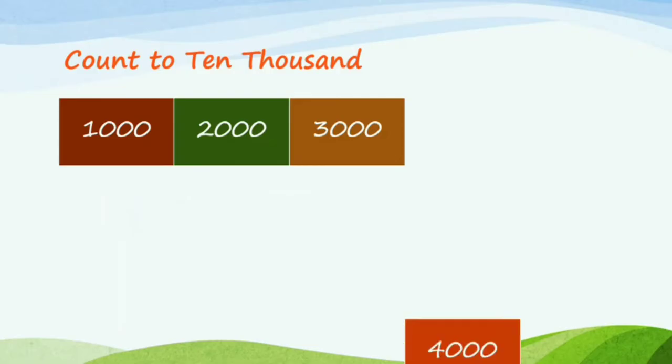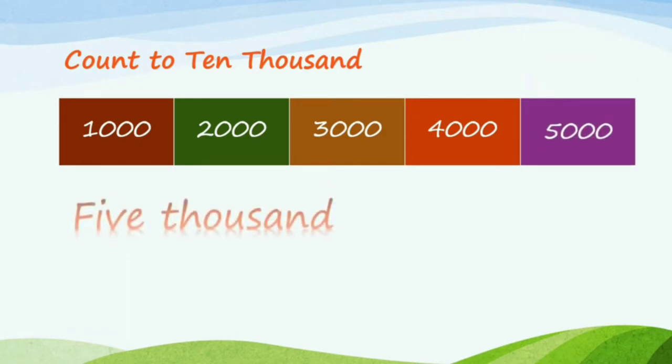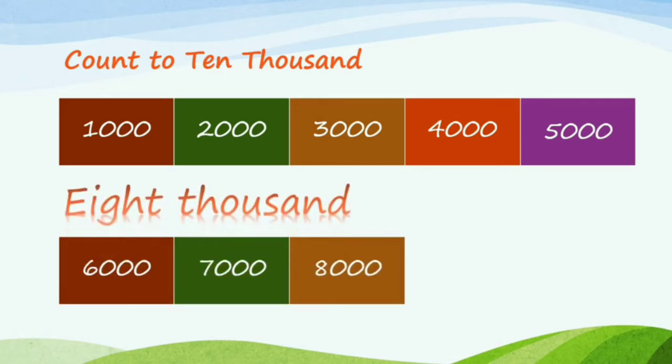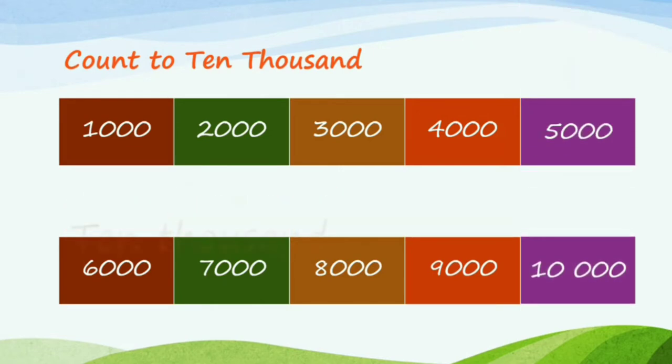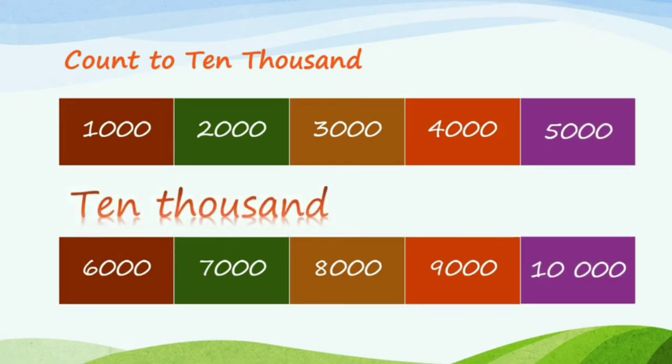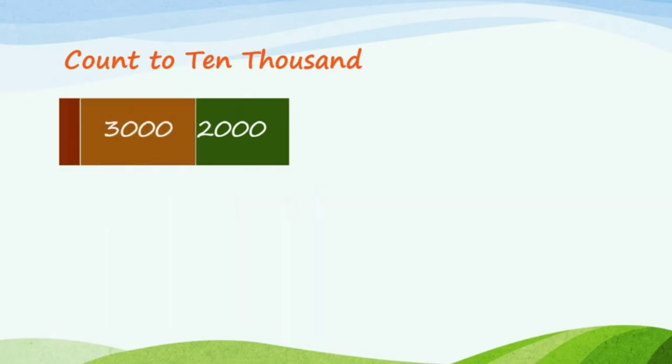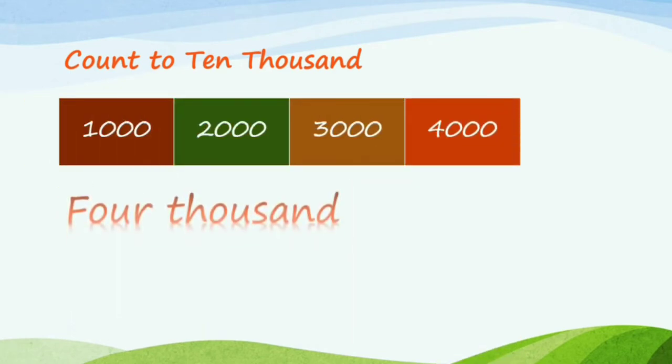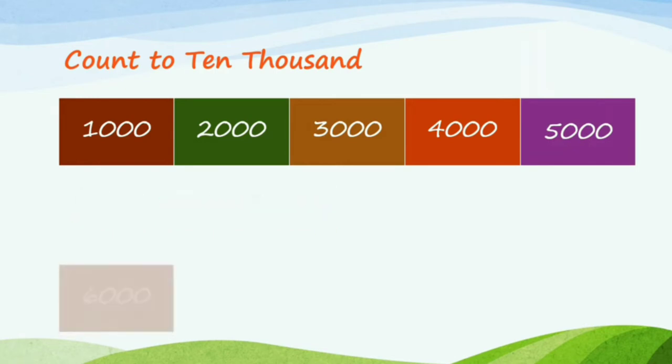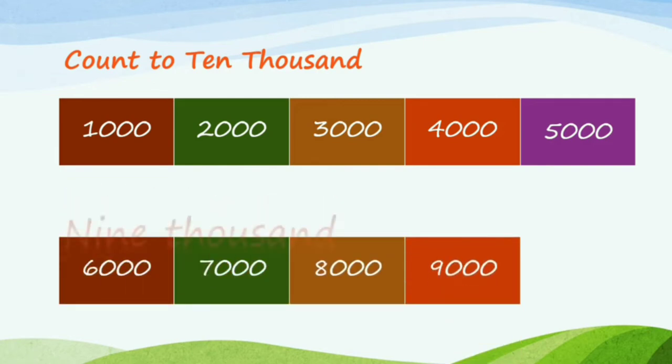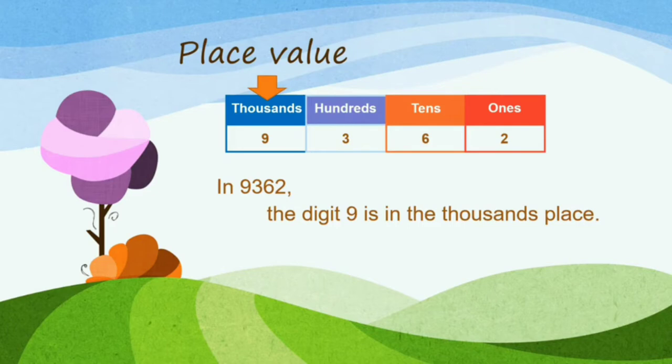Let's count this number, 1,000 to 10,000. Kita ulang kembali. 1,000, 2,000, 3,000, 4,000, 5,000, 6,000, 7,000, 8,000, 9,000. The digit 9 stands for 9,000.